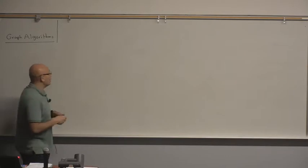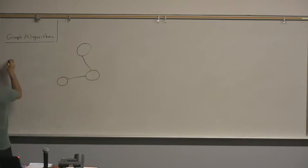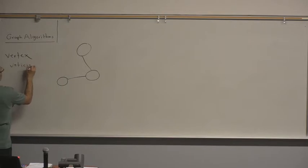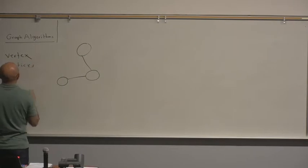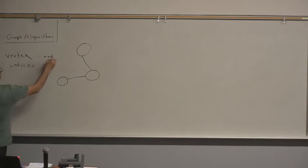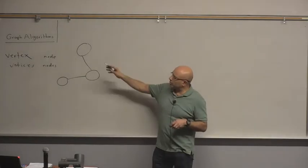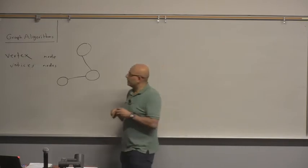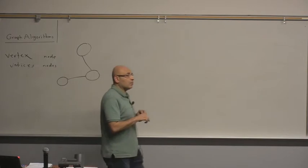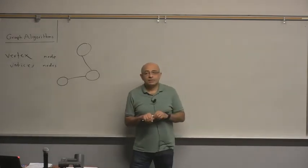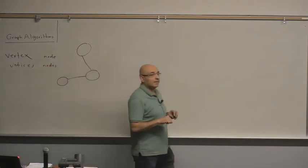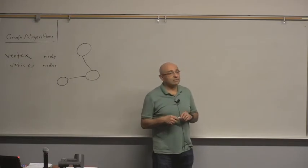What's a graph? A graph is just a number of nodes or vertices and edges. The singular is vertex, the plural is vertices. We will be using nodes and vertices interchangeably in this course, although people tend to use the word 'node' more with trees. What's the relation between a graph and a tree, and what's the difference between a graph and a tree?